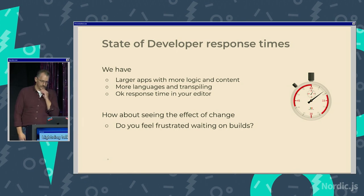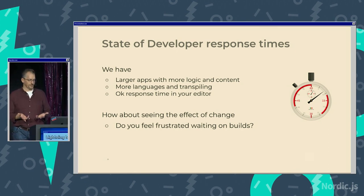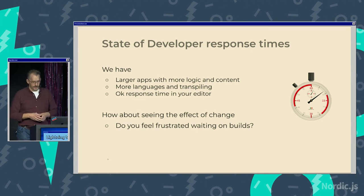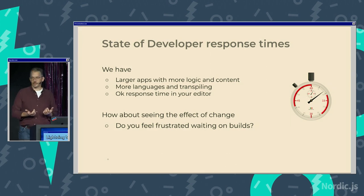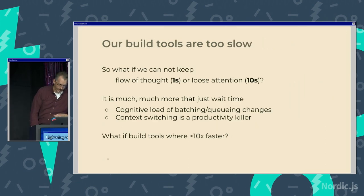So what's the state of developer response times? We're having larger and larger apps that have more logic and content. We're using more cool languages that need transpiling. Our editors are probably okay when hitting buttons, but how about seeing the effect of a change in your running app? How can you get feedback? How many of you are frustrated waiting for builds? I think they're too slow.